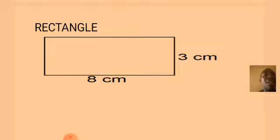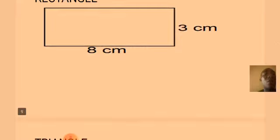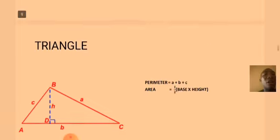What about the area? The formula for area is length multiplied by breadth, that is 8 cm multiplied by 3 cm, which equals 24 cm squared.